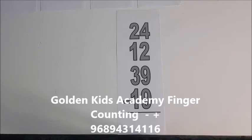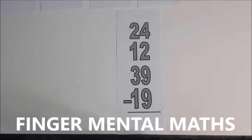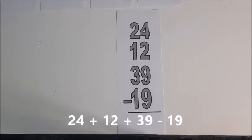Hello each and everyone, welcome to Golden Kids Academy channel. We are here to use our fingers to learn math. Today we're going to work on mental math. We have 24 plus 12 plus 39 take away 19, so let's watch out.